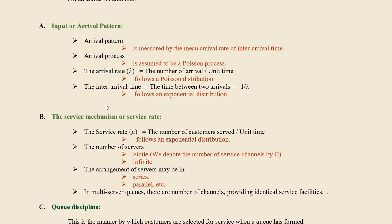Input refers to how the customer enters the queue, and that is called the arrival pattern. The arrival pattern is measured by the arrival rate, and that process is assumed to be a Poisson process. The arrival rate lambda is calculated by the number of arrivals per unit time.